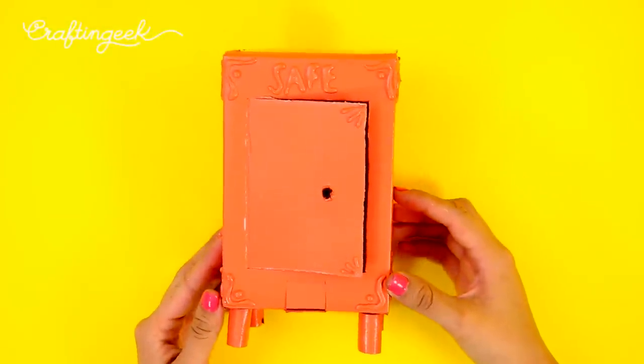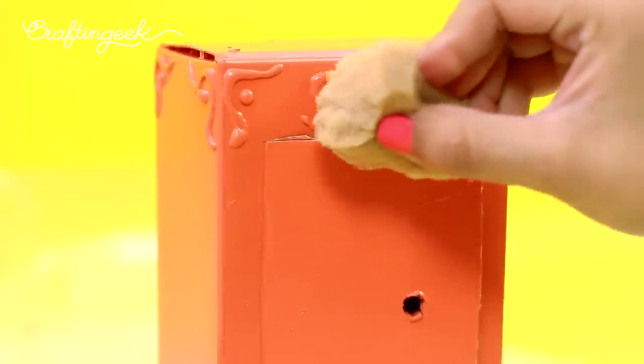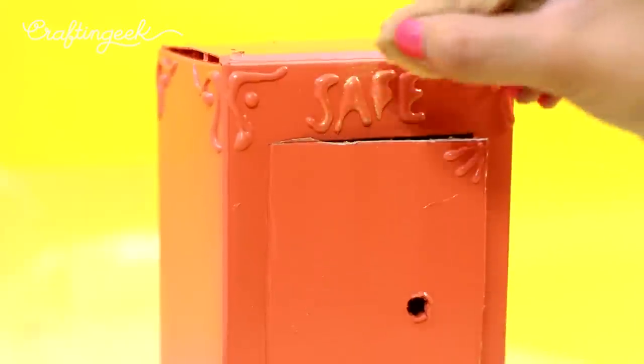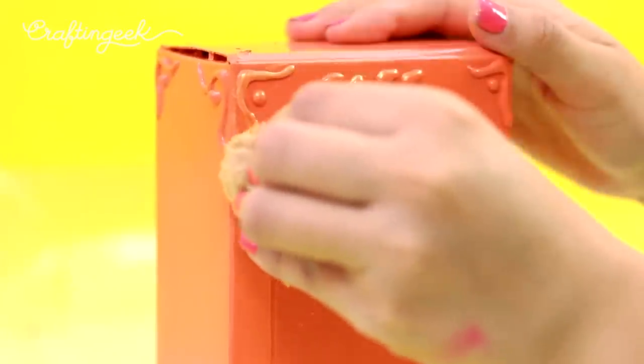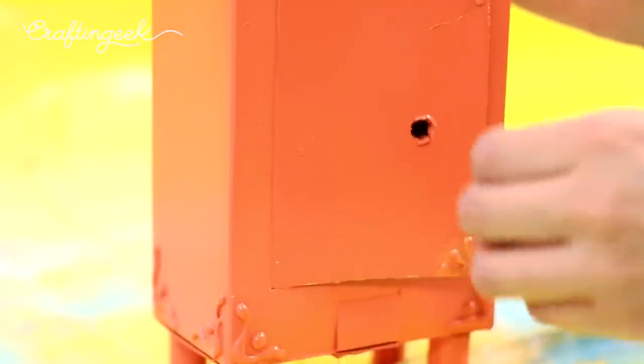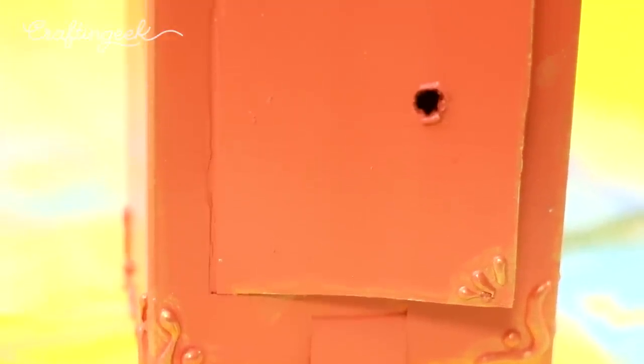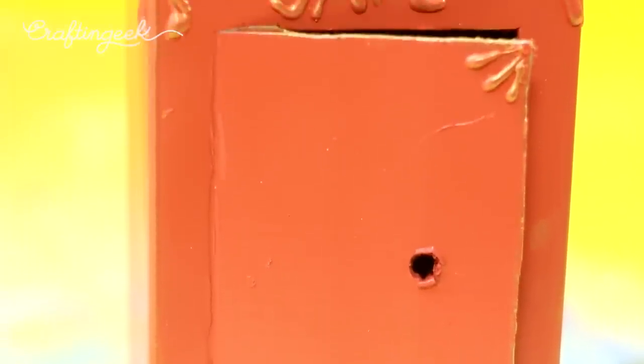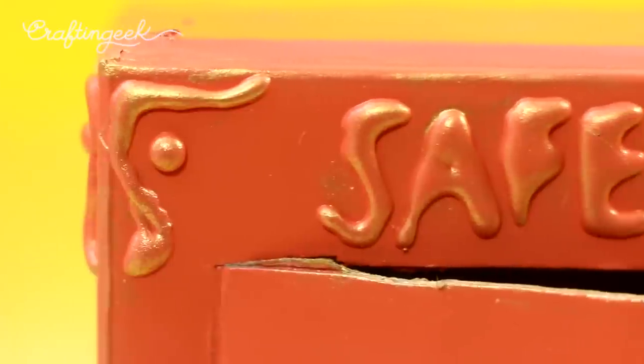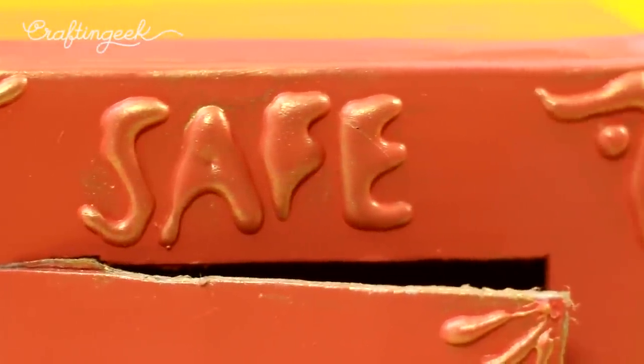Now we just have to paint it. I chose this sort of salmon color. Also I'm going to use gold paint for the details to give it a metallic effect and add it on the silicone textures. I recommend you to use a sponge so that you only use a little bit of paint and to give it that metallic look. It looks super cute. I love how it's turning out.